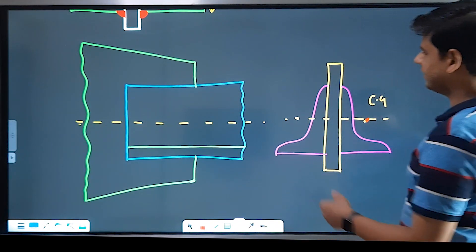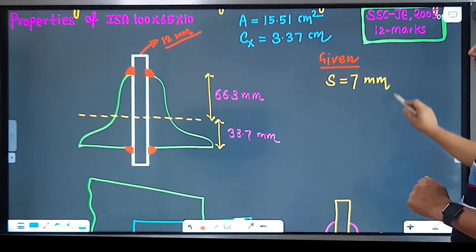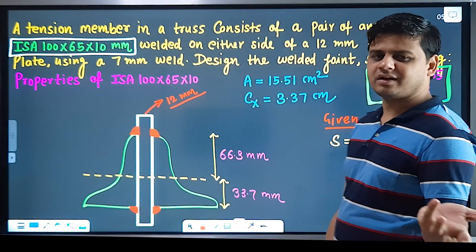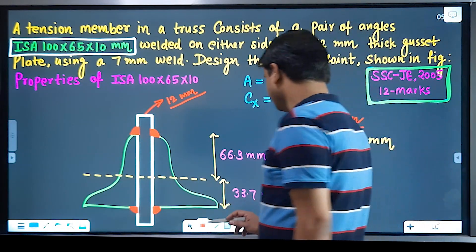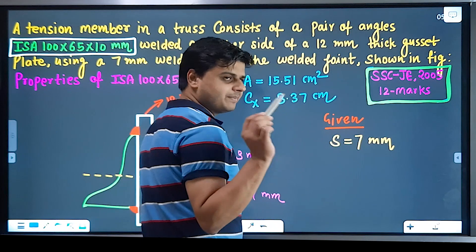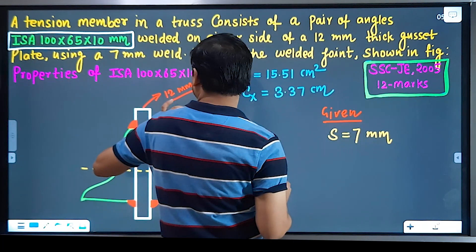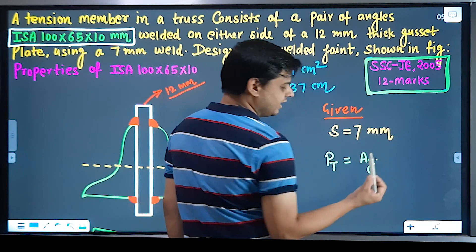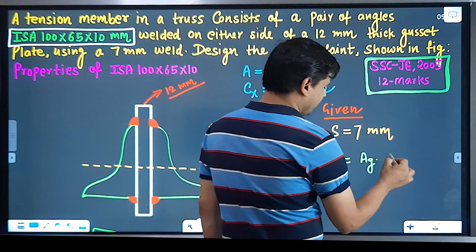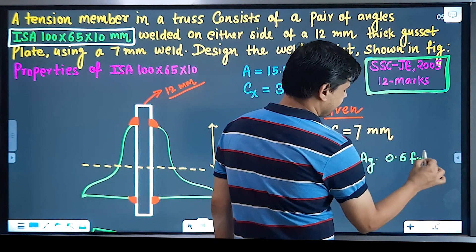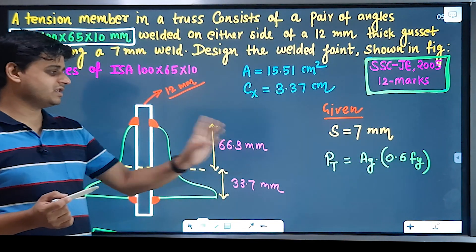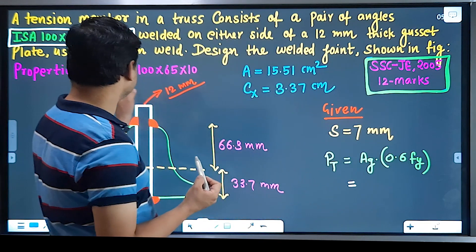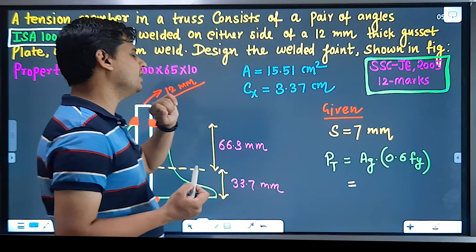First, we need to know how much load the tension member carries. For a tension member, the load-carrying capacity is: gross area multiplied by permissible stress in axial tension, which is 0.6 Fy. The gross area of one angle section ISA 100×65×10 is 15.51 cm².